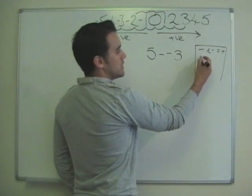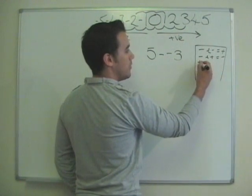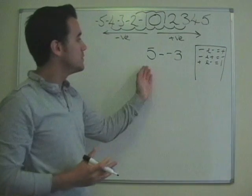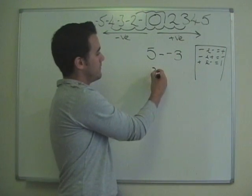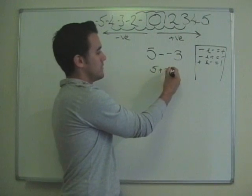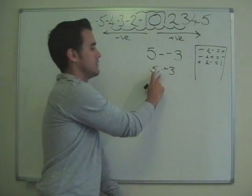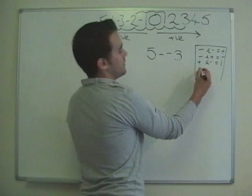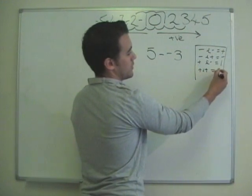But anything else, like a minus and a plus, will give us a minus. A plus and a minus will always give us a minus, which we can see, because we know if we've got five plus minus three, that actually is just five take away minus three. It just becomes take away. And then obviously we've got a plus and a plus. That's going to equal a plus.